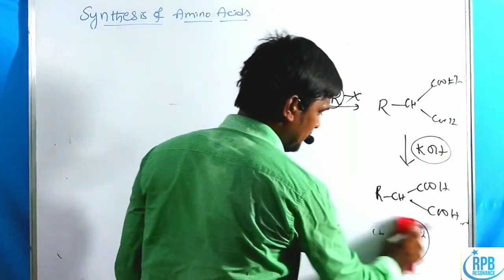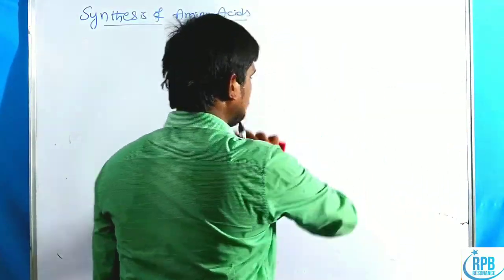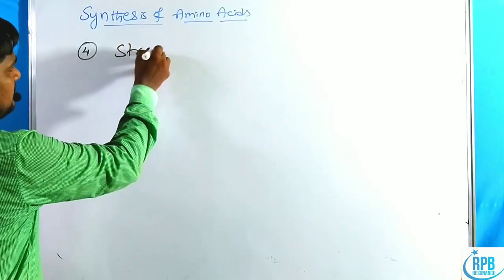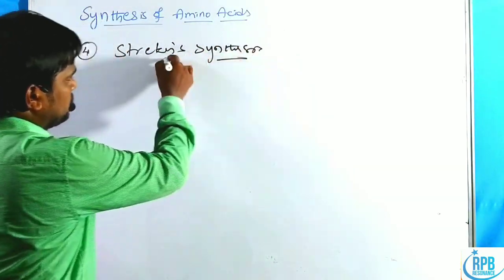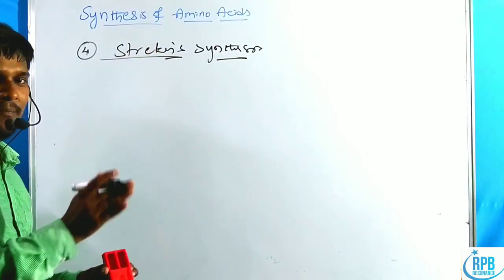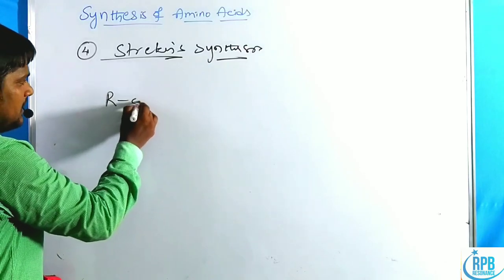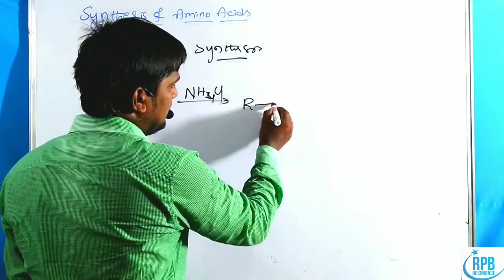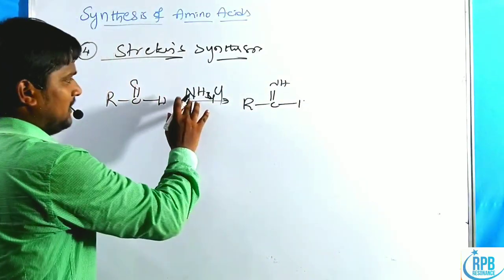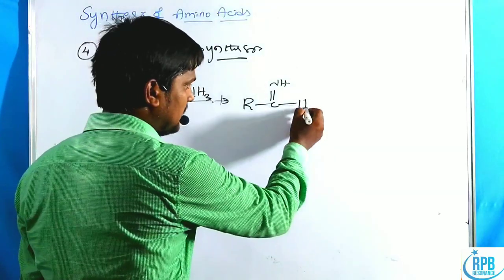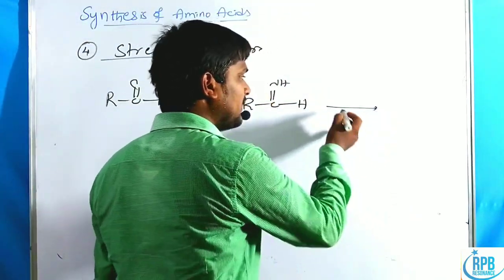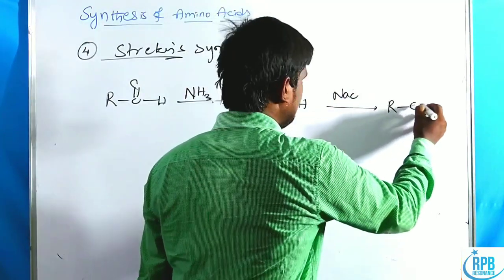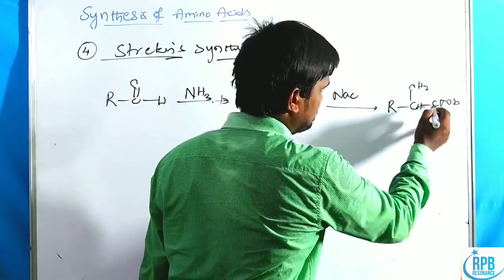The fourth important method is Strecker synthesis. In this method, amino acids are prepared from aldehydes. The aldehyde is treated with excess ammonium chloride (or ammonia) to form an imine. This imine then undergoes nucleophilic addition of hydrogen cyanide or sodium cyanide.